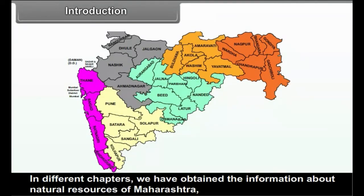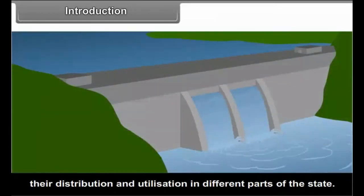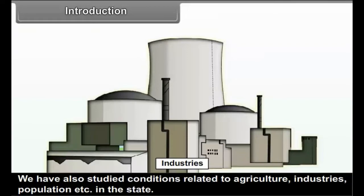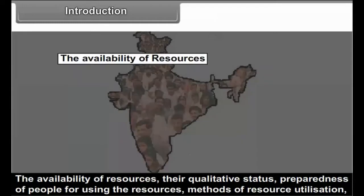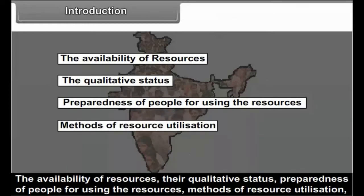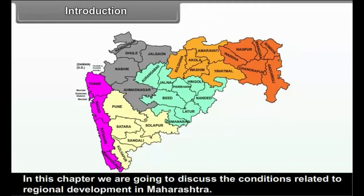In different chapters, we have obtained information about natural resources of Maharashtra, their distribution and utilization in different parts of the state. We have also studied conditions related to agriculture, industries, population, etc. in the state. Using available resources, people from different areas try to attain development of individuals, the society and the region. In this chapter, we are going to discuss the conditions related to regional development in Maharashtra.